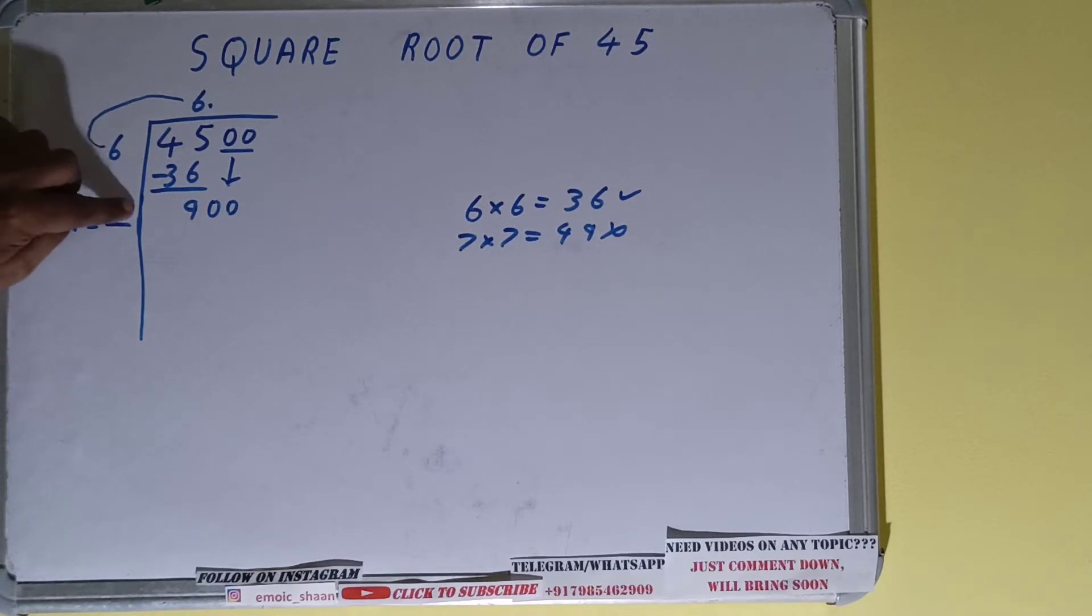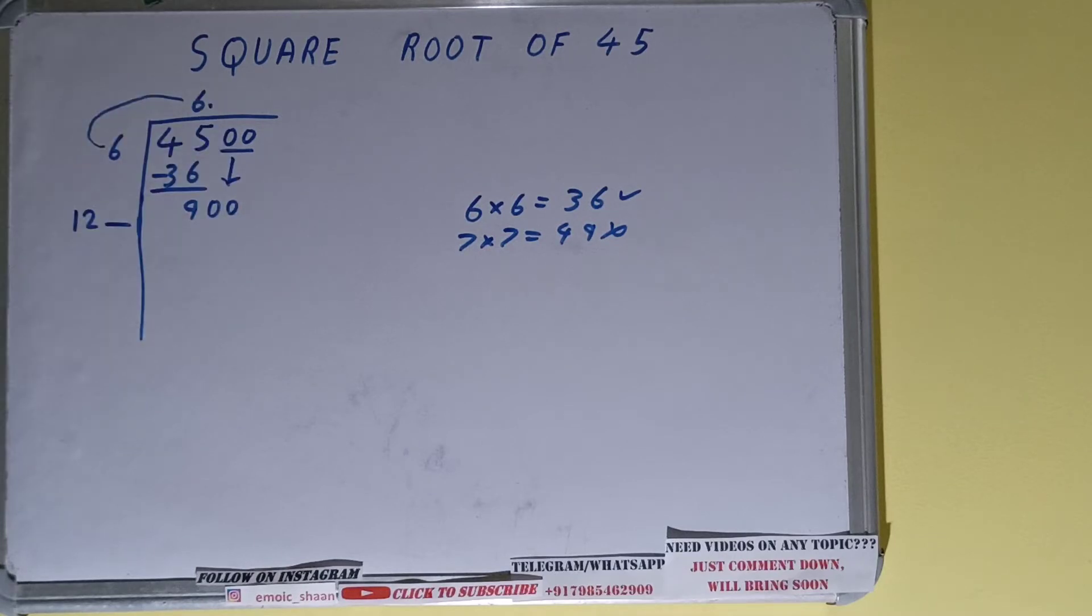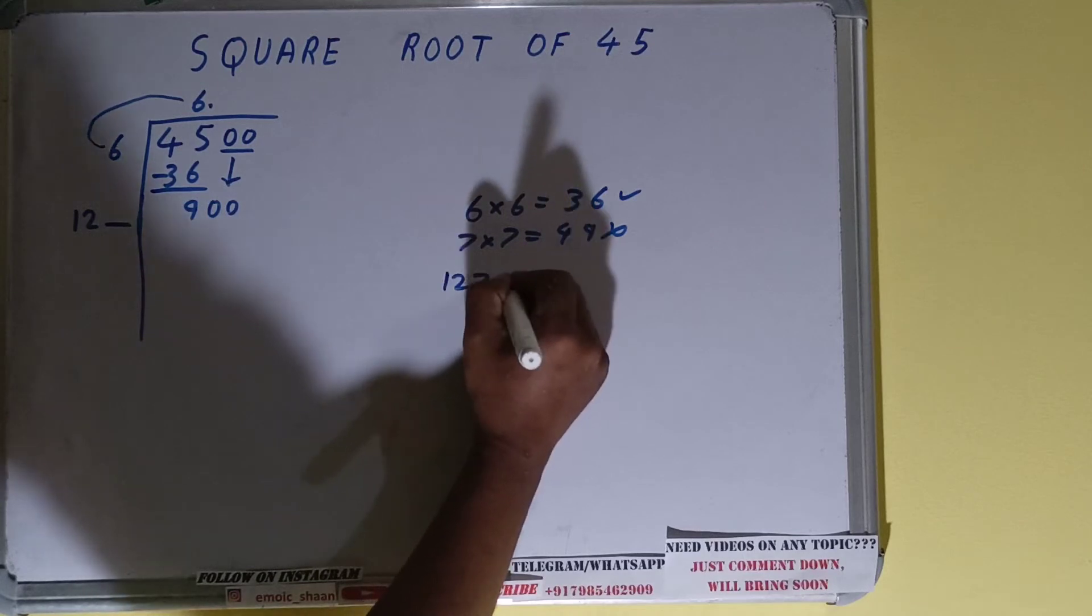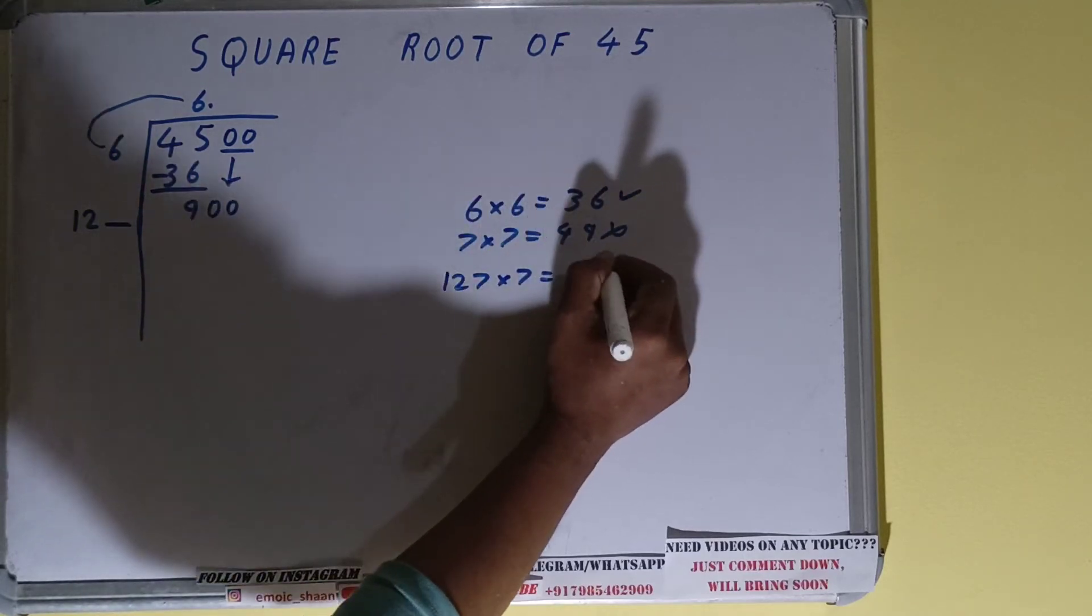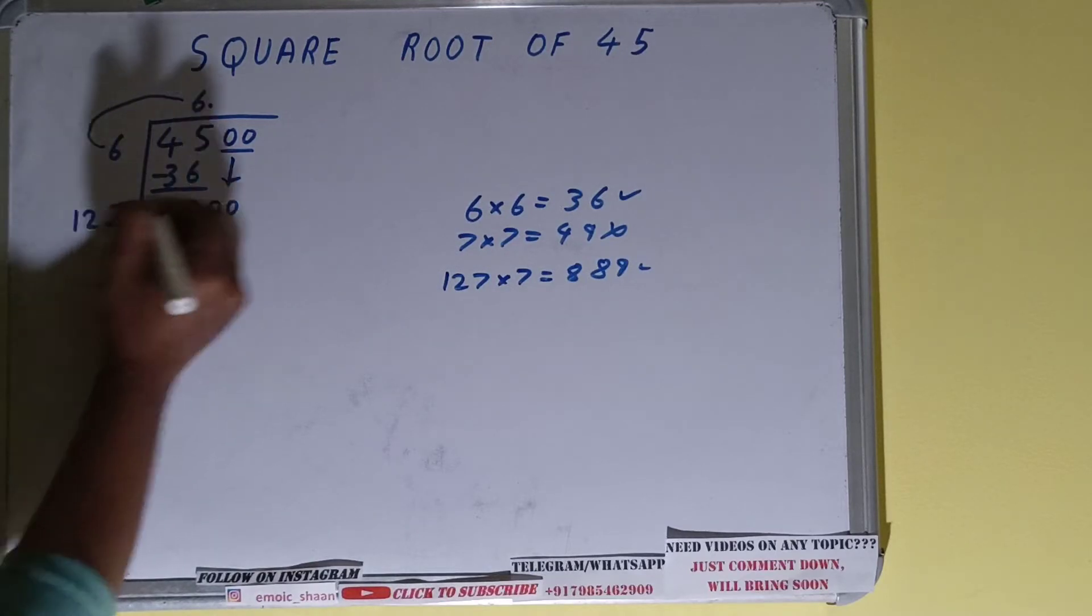So whatever number we take here we have to take here also, and the value should be less than 900. So 12 times 6 is 72, 12 times 7 is 84. So we can take seven times, all right. 127 into 7 is 889. Yeah, that is all right to take, so let's take seven times.